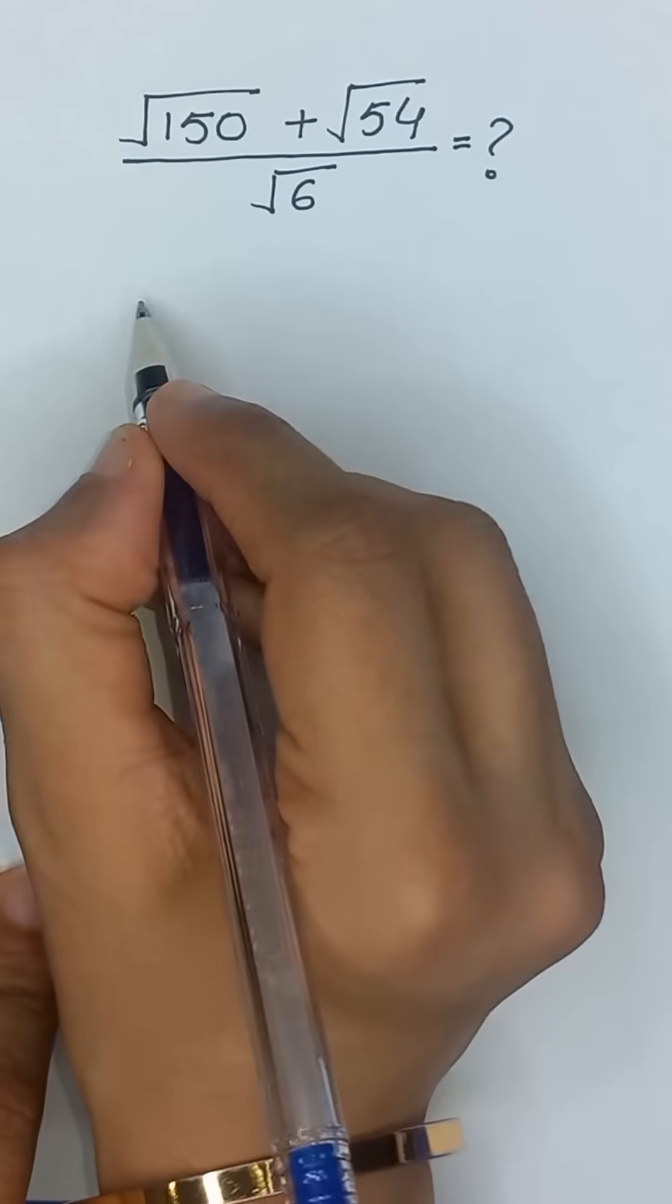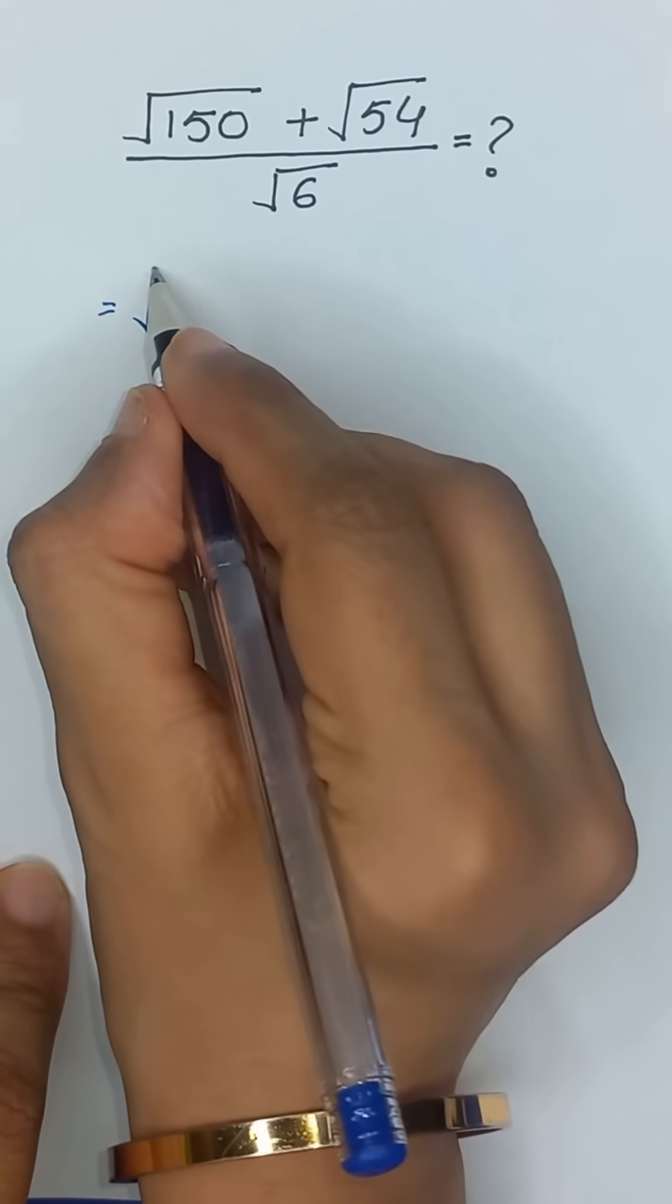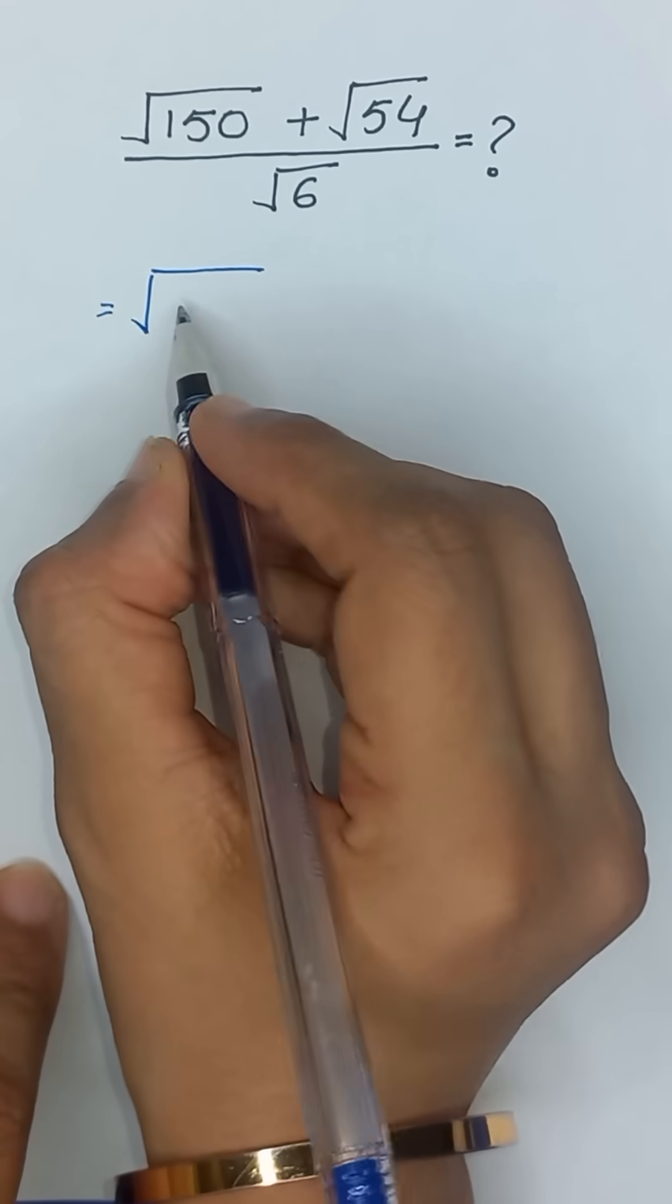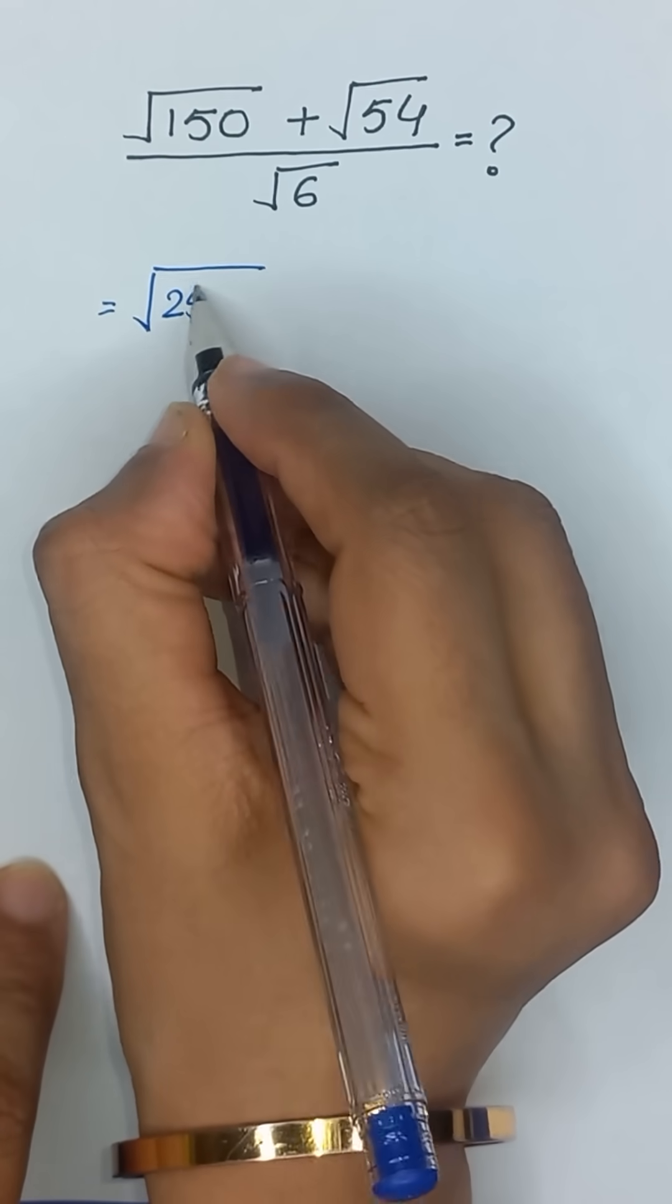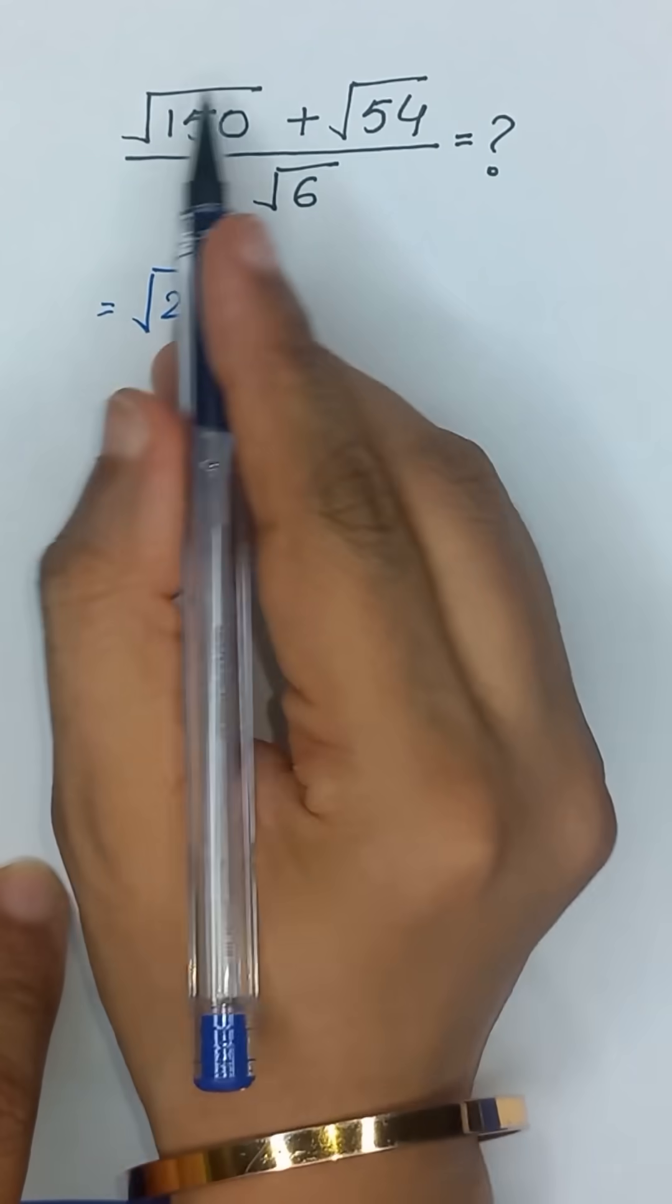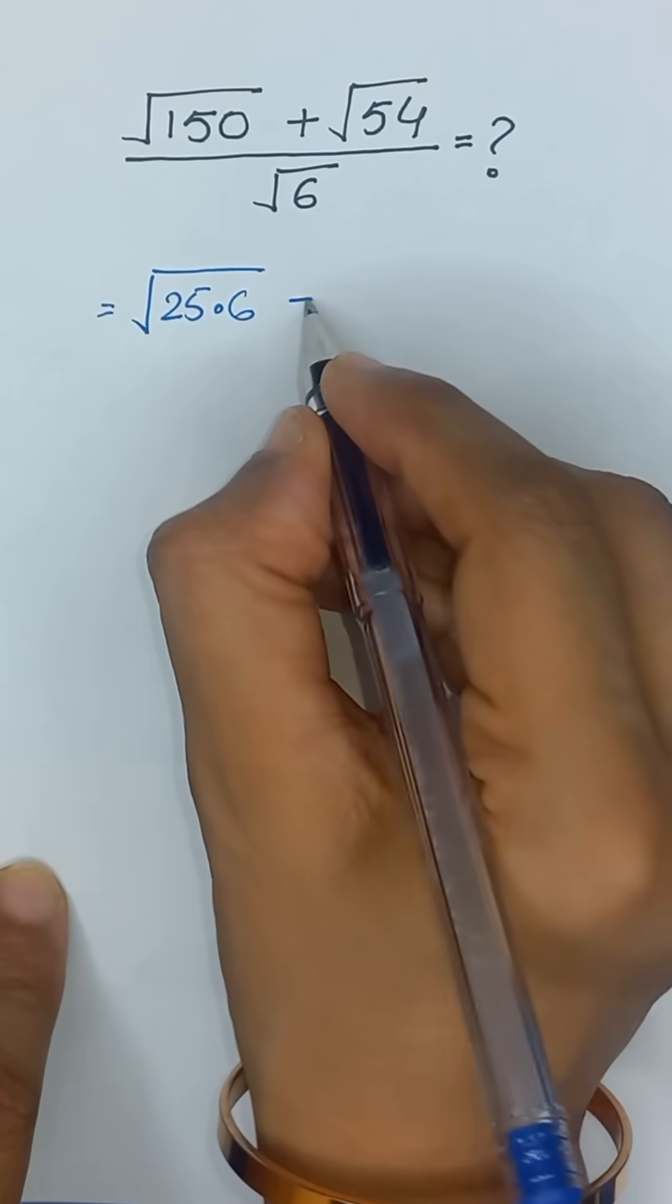Square root of 150 means square root of 25 times 6, because 25 times 6 is equal to 150.